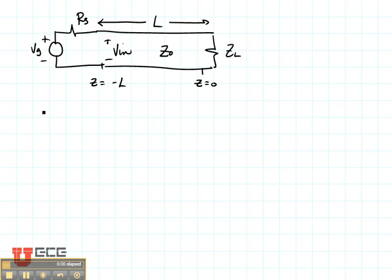If I wanted to find V_in, I could find it exactly the way we did before. That's going to be V₀⁺e^(-jβz). Remember we substituted in minus L, so it ends up being e^(jβL) plus Γ times V₀⁺e^(-jβL). So that is one way that we could write V_in, the voltage at minus L.